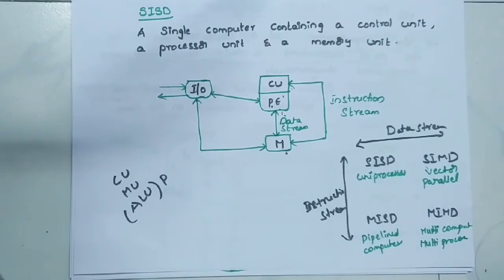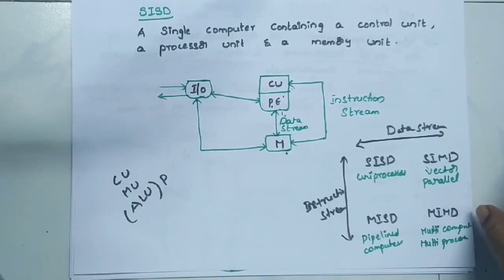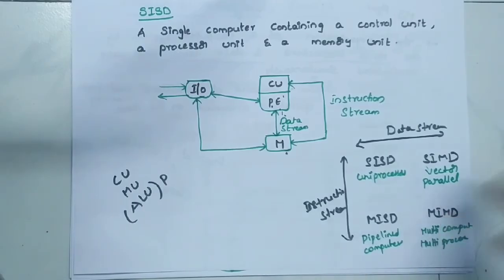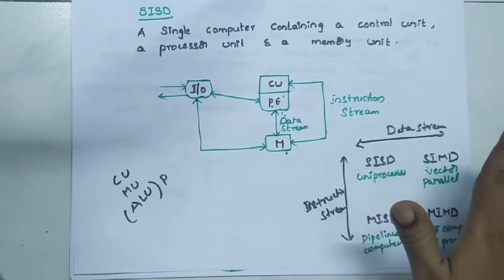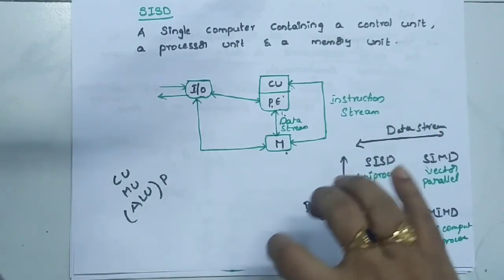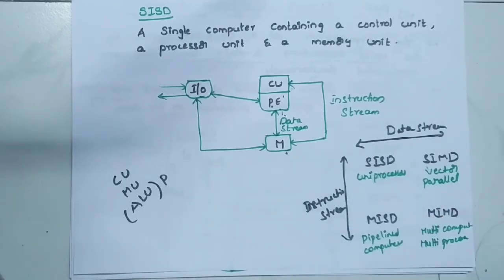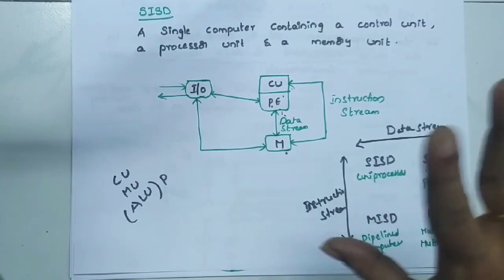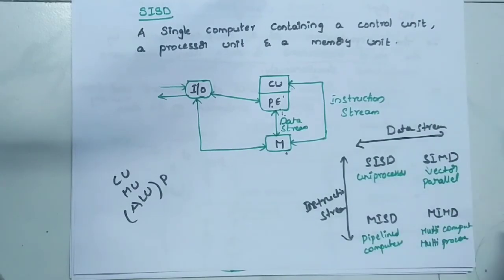This is completely about Flynn's classification of computers. All four categories have been explained in detail. There is no further concept regarding this — this is the final concept. For an essay question, write the definition and explain all four concepts with diagrams. So this is a potential essay question. Thank you, the next class is coming.